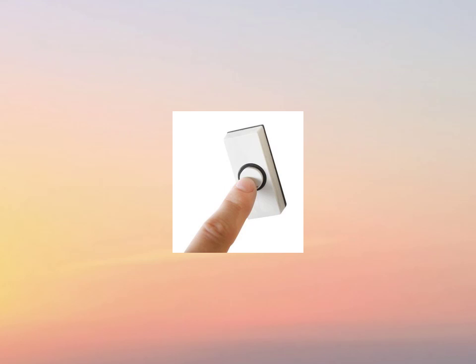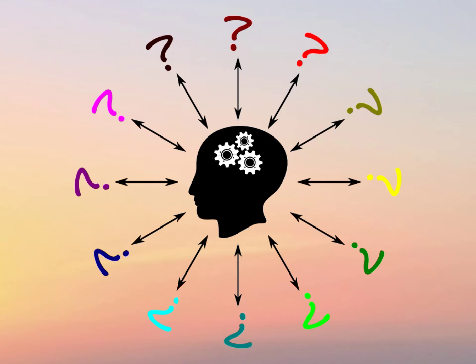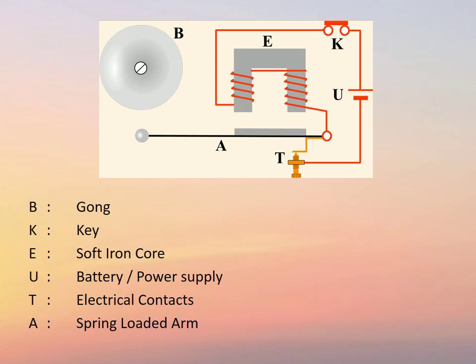Do you recognize the source of the sound? That was a doorbell, right? But how does a doorbell work? I certainly have no idea. This is a diagrammatic representation of an electric bell. Here B is the gong, K is the key.